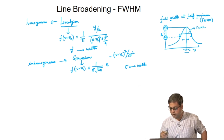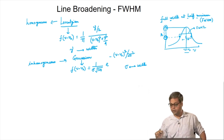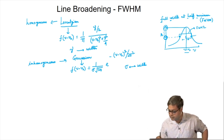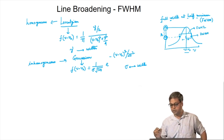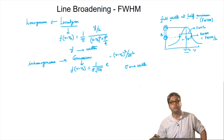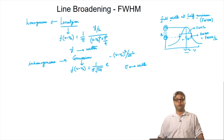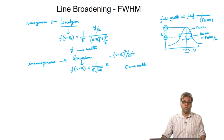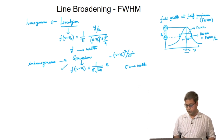Instead of taking the full frequency difference, if we take the frequency difference between nu_0 and one of these half-maximum frequencies, that is called the half width at half maximum. Because the spectrum is symmetric, half width at half maximum equals FWHM divided by 2. If the functional form of the line shape is known, we can find the functional form of the full width at half maximum. Let us look into the Gaussian functional form, evaluating this function at nu equals nu_0.